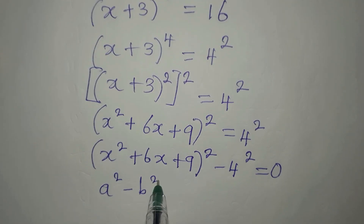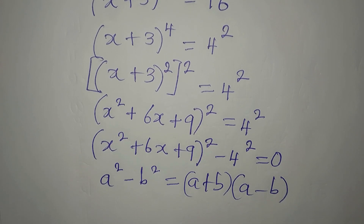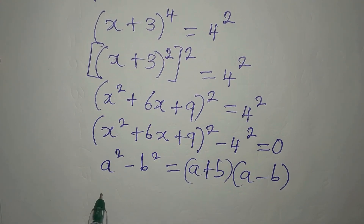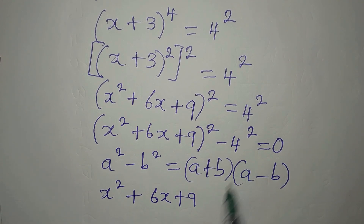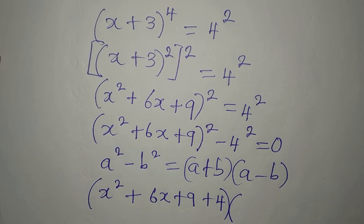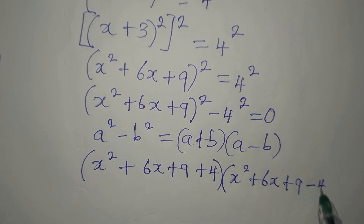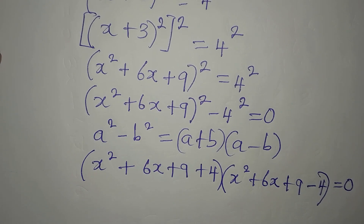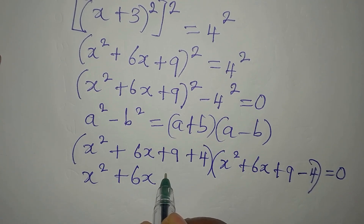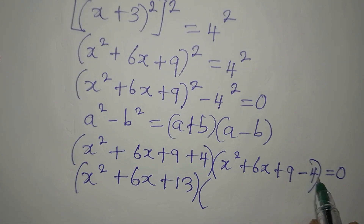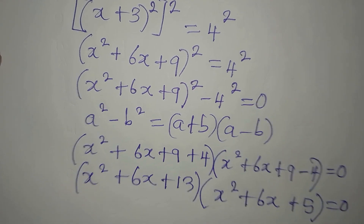Remember that a squared minus b squared equals (a + b)(a − b). Our a is the whole expression (x² + 6x + 9) and our b is four. So in the first bracket we write (x² + 6x + 9 + 4) and in the second bracket (x² + 6x + 9 − 4), all equal to zero. This gives us (x² + 6x + 13)(x² + 6x + 5) = 0.